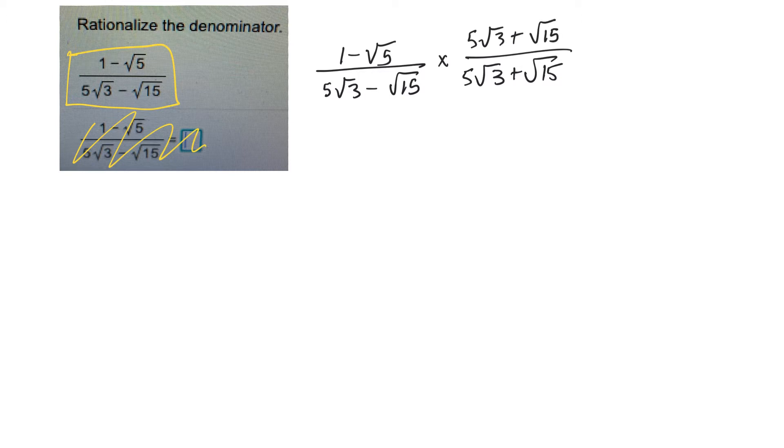So now we get to FOIL all of these binomials. So let's start with the top one. I'll color code things. So that times that will be 5 root 3. This times this will be a plus root 15. This times this will be a minus 5 root 15. And this times this will be minus root 5 times 15, 75, I think.